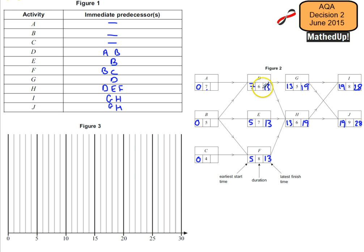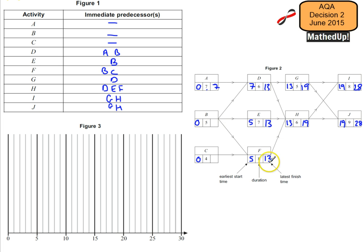Going back, A needs to finish at the latest by 7 minutes, otherwise it's going to delay D - there's no float there. Then 13 minus 6 is 7, 13 minus 7 is 6, and 13 minus 8 is 5. So the latest that C can finish is after 5 minutes, otherwise it will delay F. And similarly, B's latest finish is after 5 minutes, otherwise it will delay F.